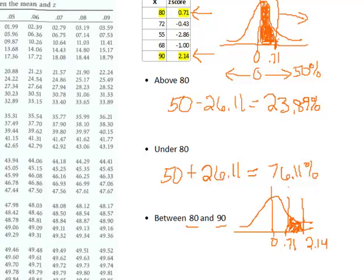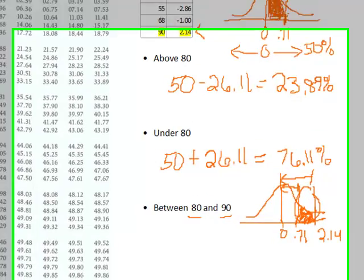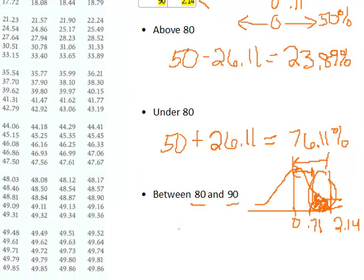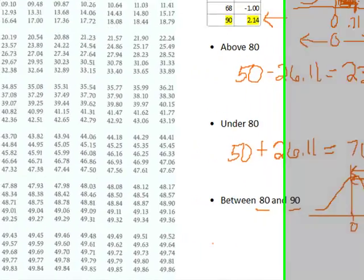You can see we might need to do a little bit of subtraction. We can take the entire area from 2.14 to 0 and subtract the area from 0.71 to 0. If we subtract that, we will get this area right here. We take the larger of the two numbers, the 2.14, which encompasses the larger area.